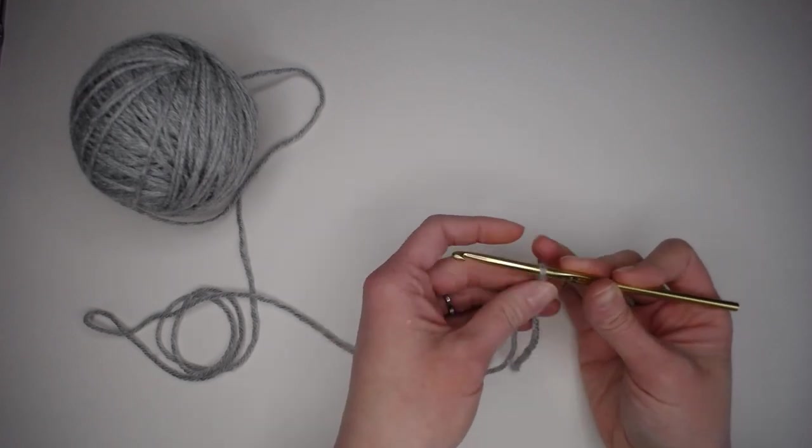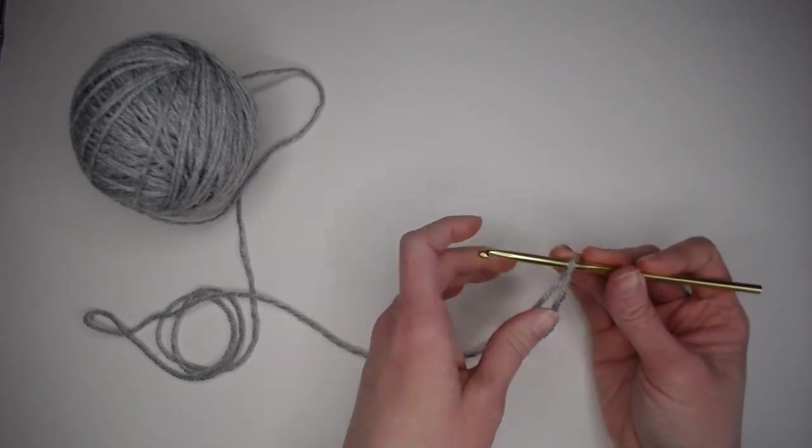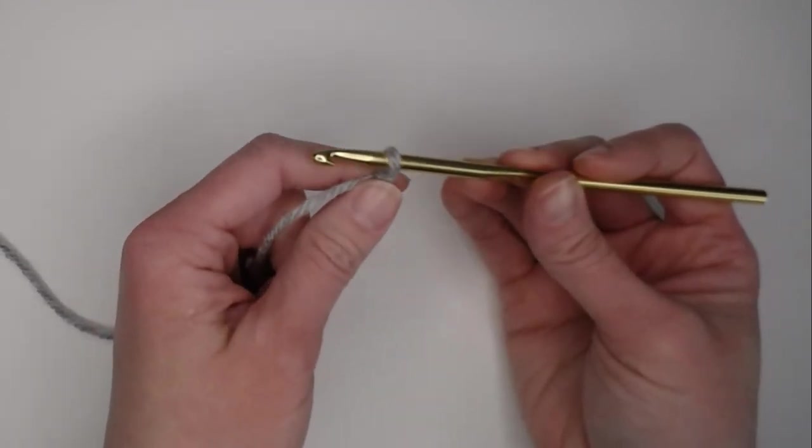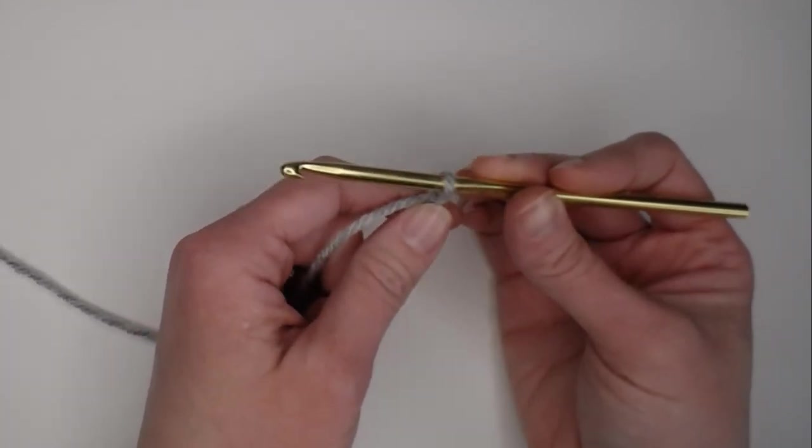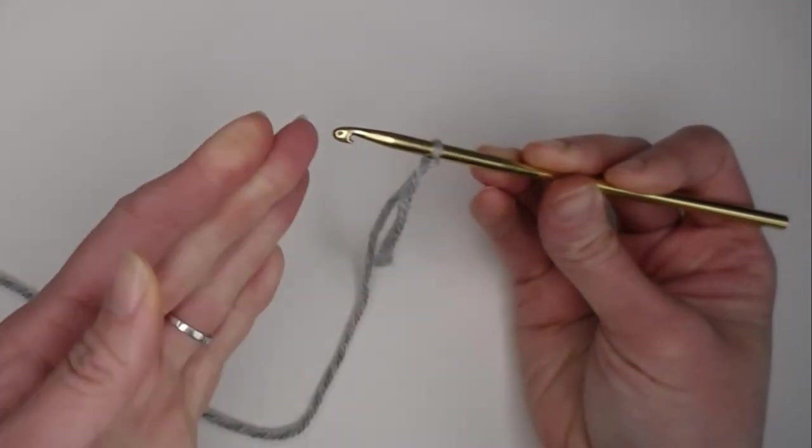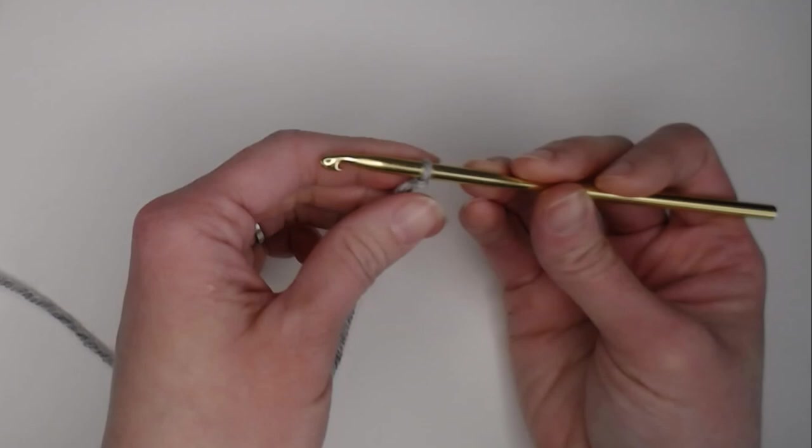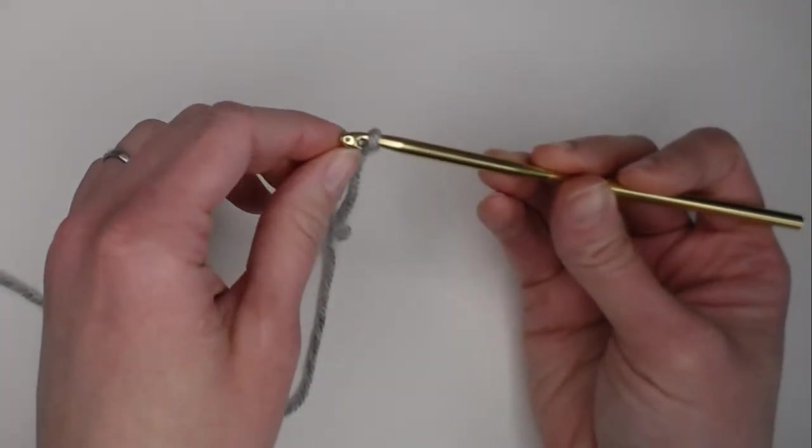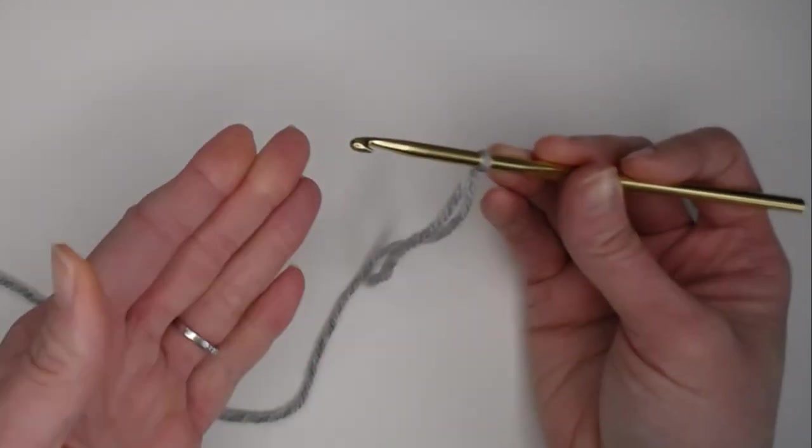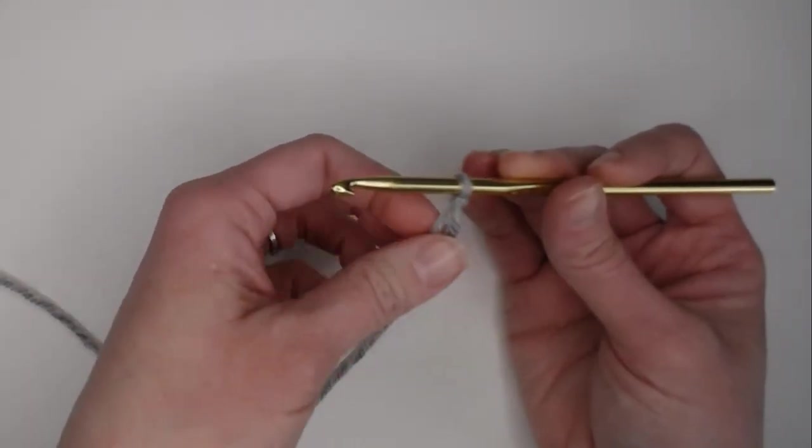Now that we've created our slipknot, I want you to focus on the tension of your yarn. You want this loop on your crochet hook to be able to slide smoothly on your crochet hook. If you pull this yarn too tight, it's known as choking your crochet hook, and you'll have a hard time actually pulling yarn and getting that hook through the loop on your crochet hook. A tight tension is very common for a brand new crocheter.